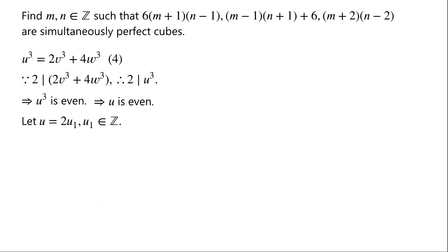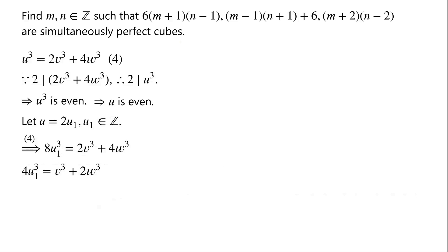We let u equal 2u₁, where u₁ is an integer. Then substituting u equals 2u₁ in equation 4, we have 8u₁ cubed equals 2v cubed plus 4w cubed. Dividing by 2, we have 4u₁ cubed equals v cubed plus 2w cubed. Rearranging, we have v cubed equals 4u₁ cubed minus 2w cubed. We label this as equation 5.